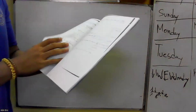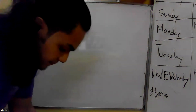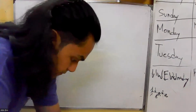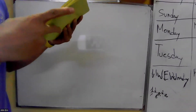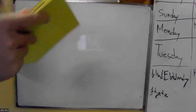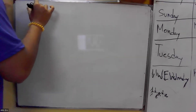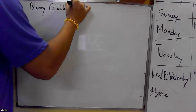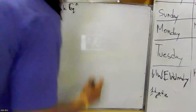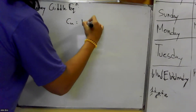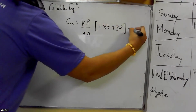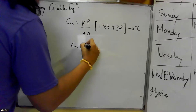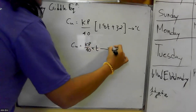The Blaney-Criddle equation: CU equals K into P divided by 40, where 1.8P plus 32 gives degrees Celsius. RCU equals KP by 40 into T to the power — for degrees Fahrenheit.